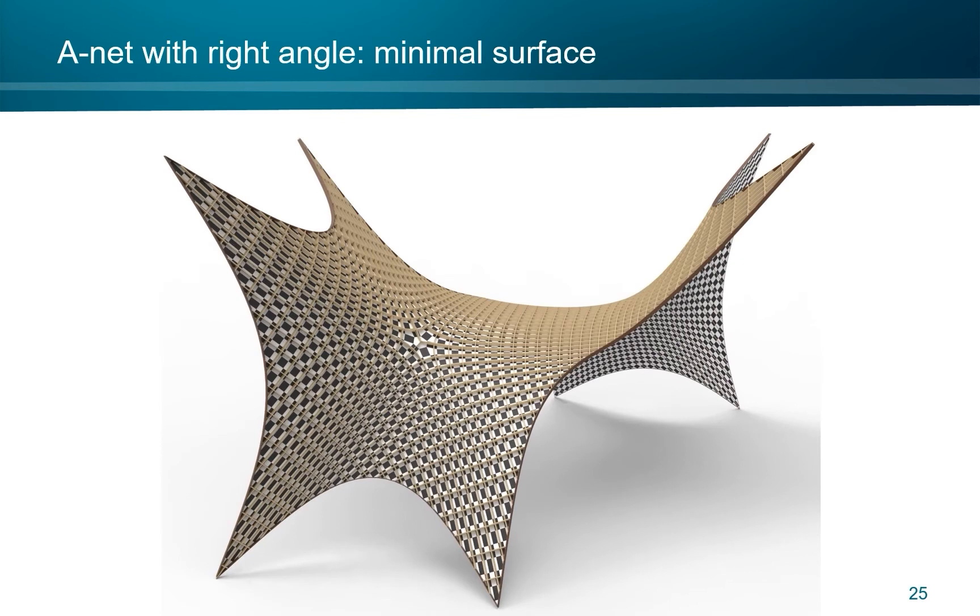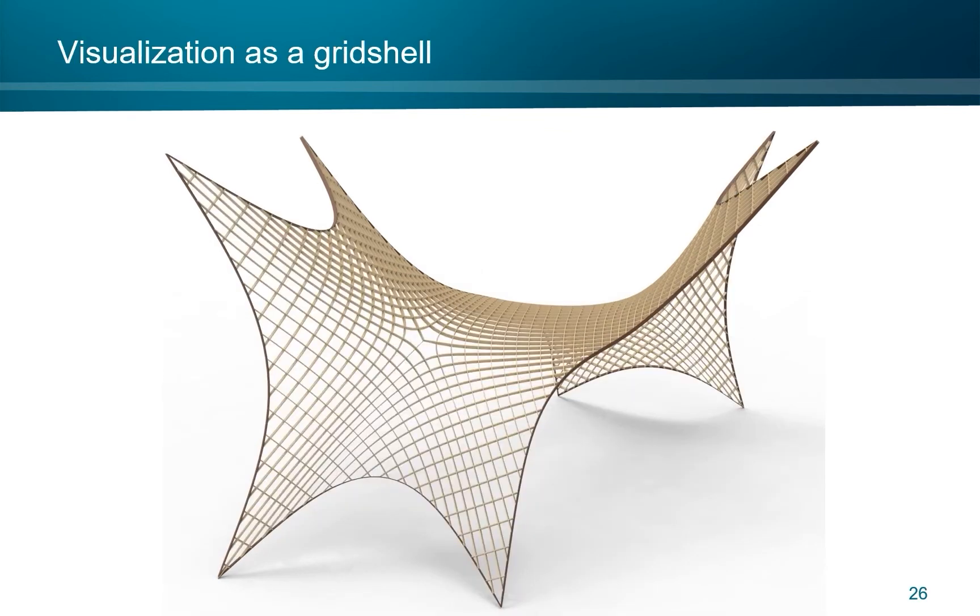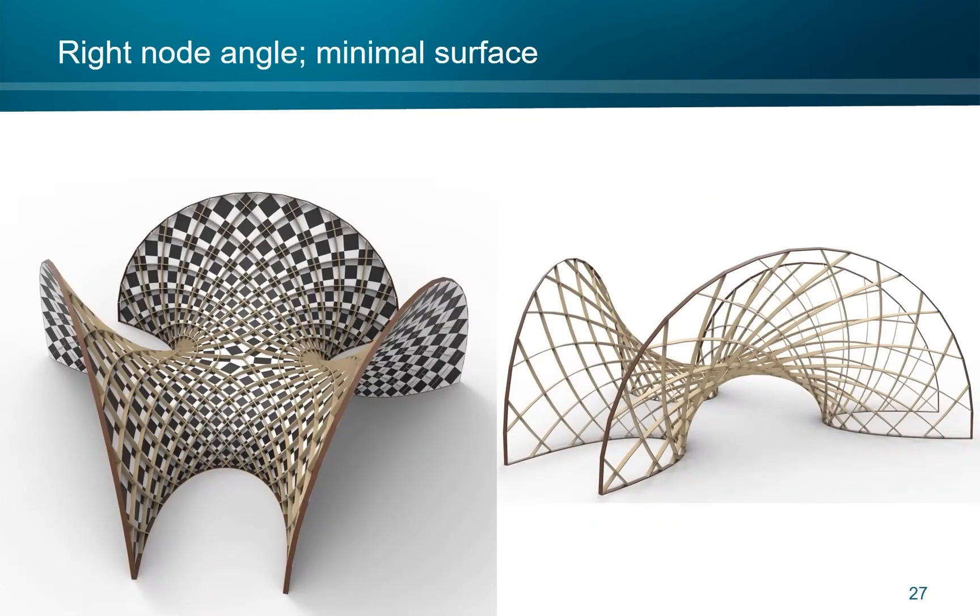Here we show an example of an a-net with a right angle, which is, of course, then a minimal surface. We also see here the checkerboard pattern. And here we just have a visualization as a grid shell from one of the two diagonal meshes. And let me now hand over to Eike. Thank you, Helmut.